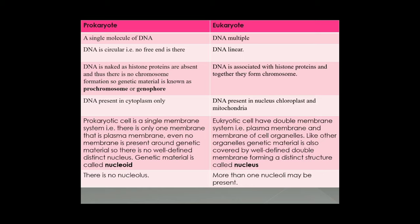As we observed in this animation, in the case of a eukaryotic cell, it has a double membrane system — there is a plasma membrane and there is a membrane for each and every organelle in most cases. Like other organelles, the genetic material is also covered by a well-defined double membrane structure, resulting in the formation of a distinct structure called the nucleus. There is another structure present in the nucleus known as nucleolus — there may be a number of nucleoli present. Nucleolus is singular; nucleoli is plural. In the case of prokaryotic cells, no nucleolus-like structure is present.